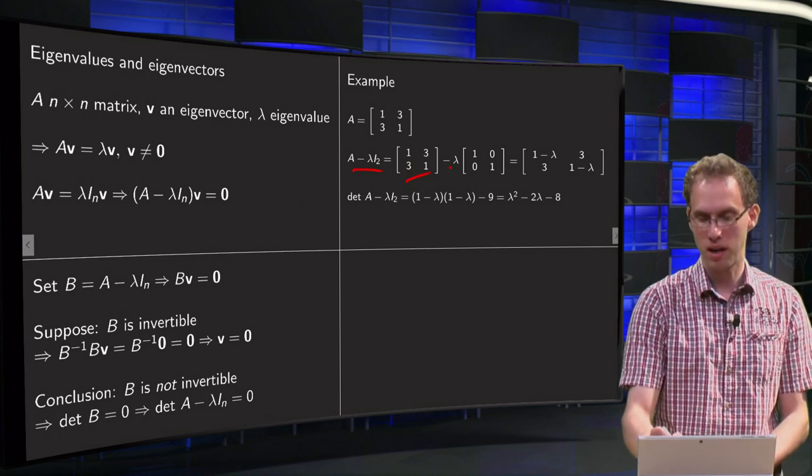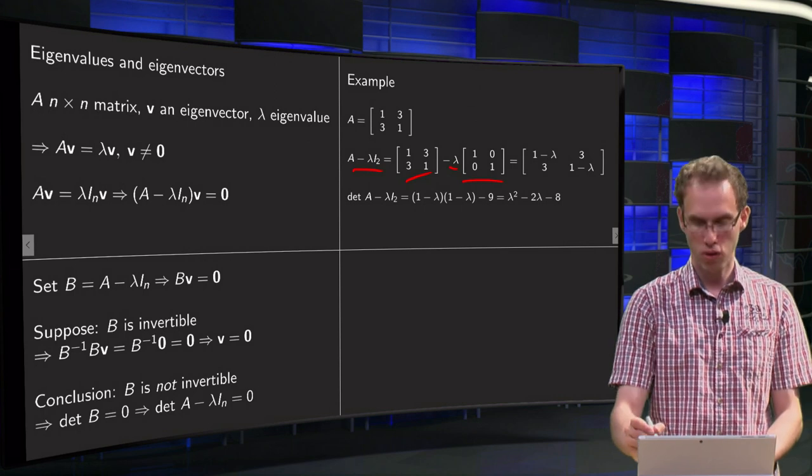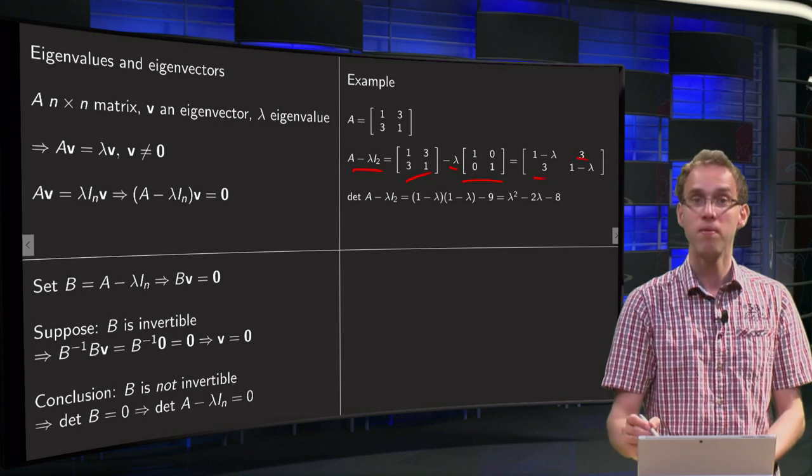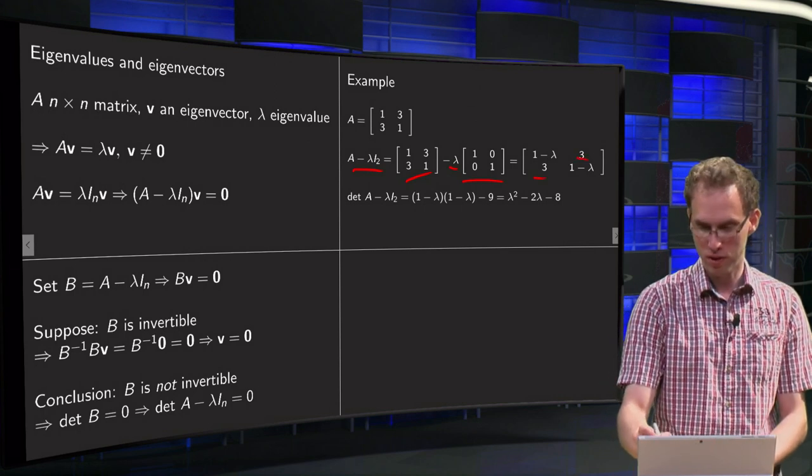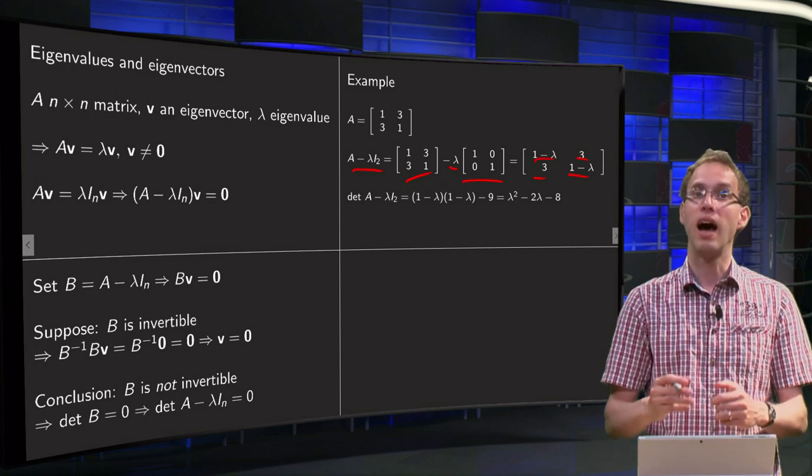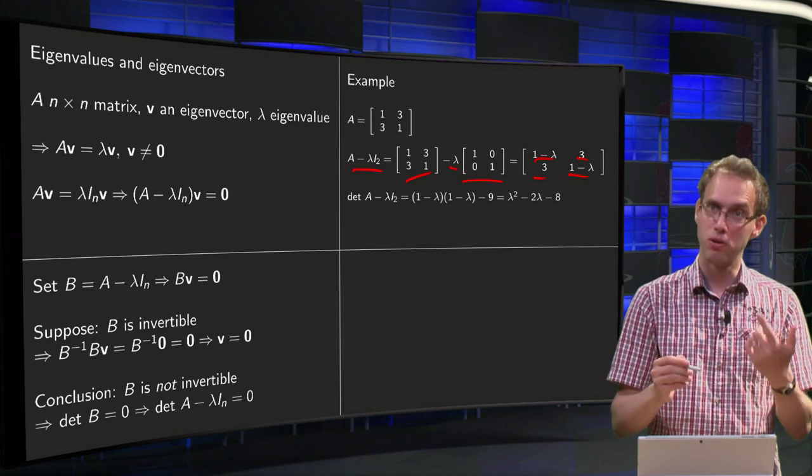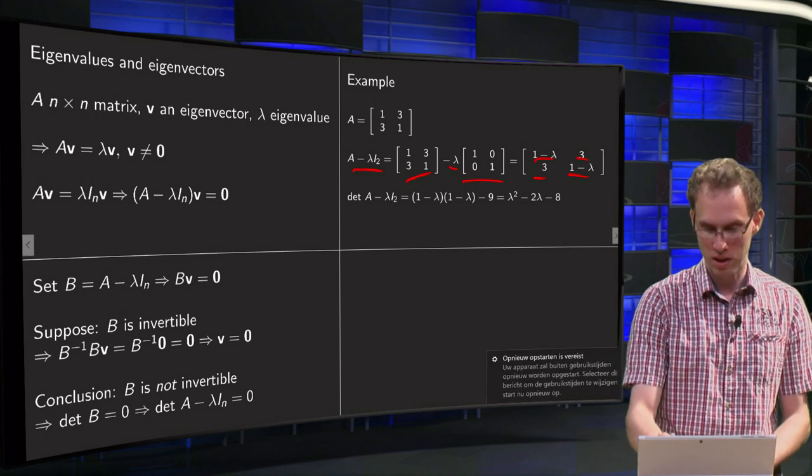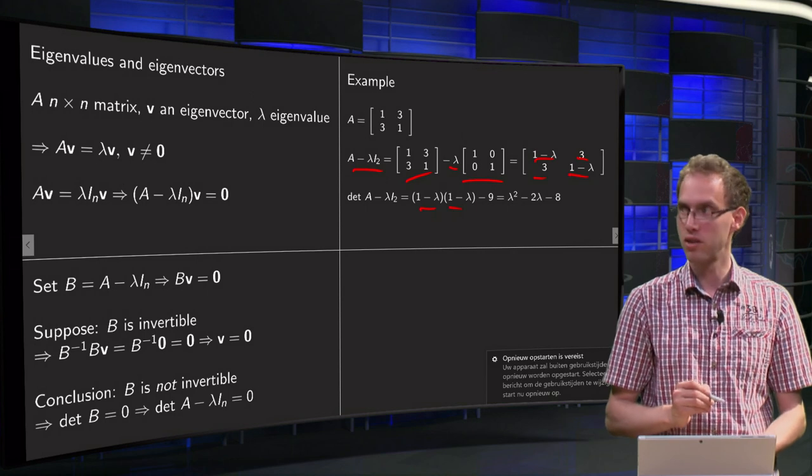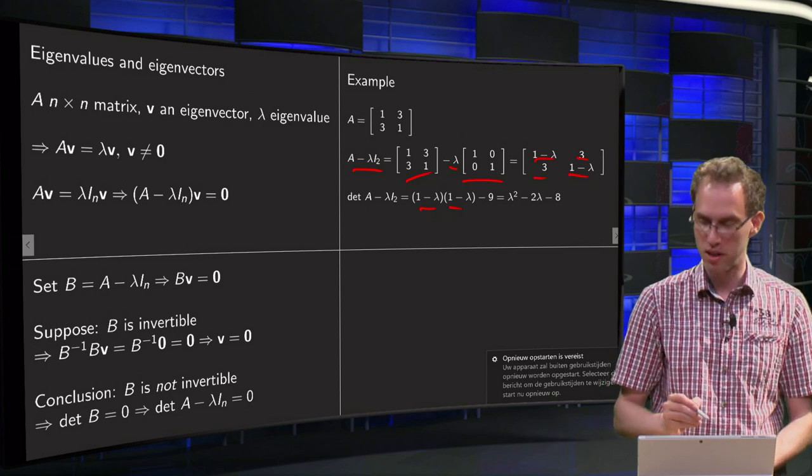So A minus lambda times the identity gives us 1 minus lambda, 3, 3, 1 minus lambda. Then the determinant: 1 minus lambda times 1 minus lambda minus 3 times 3 equals minus 9.